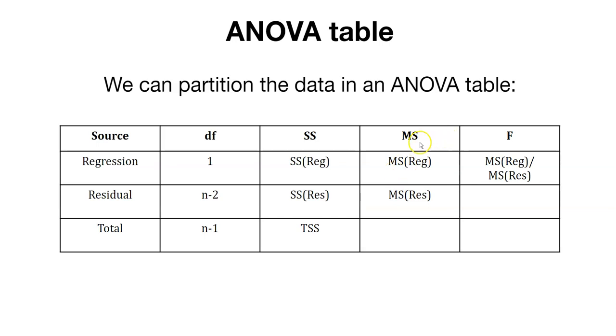We also have the mean square for the regression, the mean square for the residual. We don't have a mean square for the total just because we partition that out into the regression and the residual mean square values. Our value F will come into play when we do an F-test or a test of the regression, and that equals the mean square for the regression divided by the mean square for the residual.